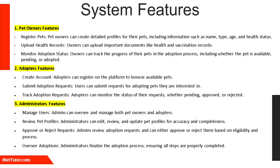Adopters can create an account on the platform to browse the list of available pets, making it easy to find the perfect companion. Once they find a pet they are interested in, adopters can submit an adoption request directly through the system. They also have the ability to track their requests in real-time, viewing whether their adoption status is pending, approved, or rejected.